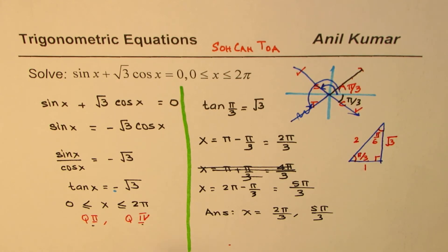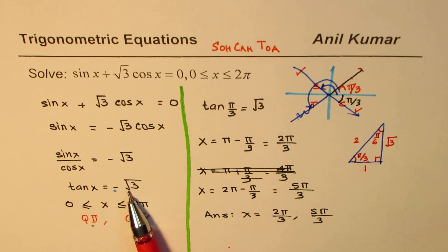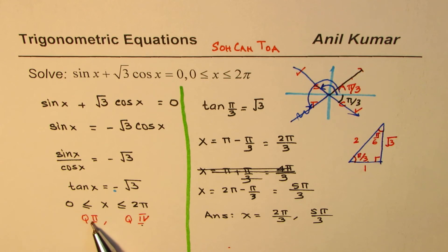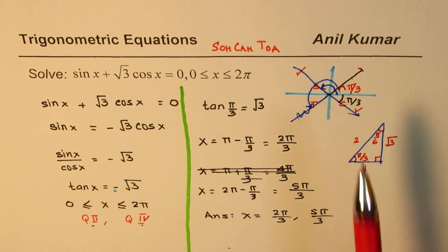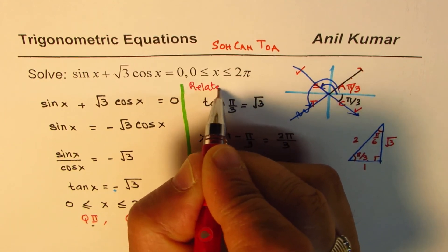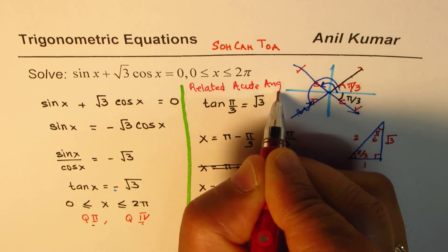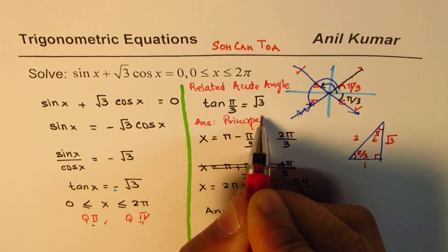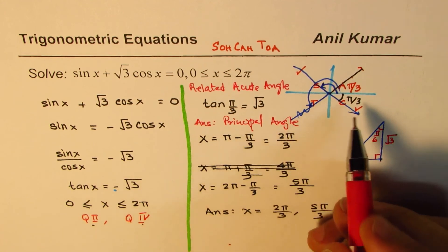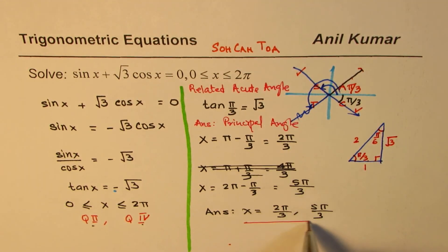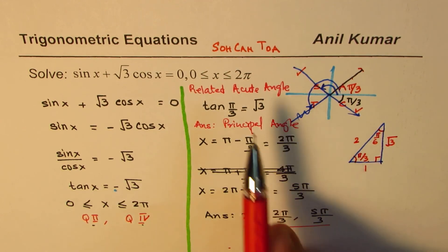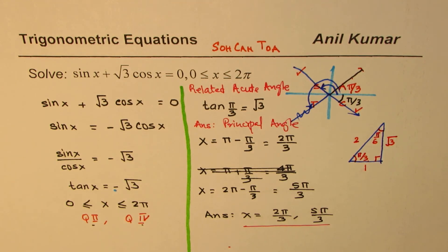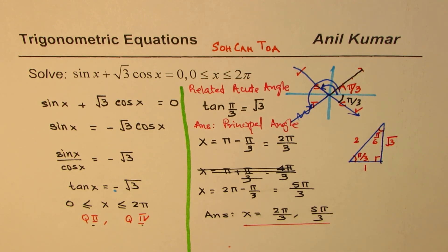To summarize the steps: first, solve the equation algebraically. Once you get a trigonometric ratio, figure out the quadrants — in our case quadrants 2 and 4. Then find the related acute angle. Finally, write down all answers as principal angles, positive going counterclockwise, within the given domain. The answer is x equals 2 pi by 3 or 5 pi by 3, found using the special triangle for an exact answer. I hope the steps are clear. Thank you and all the best.